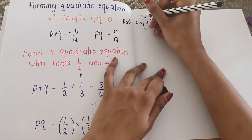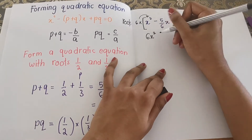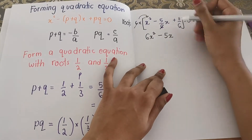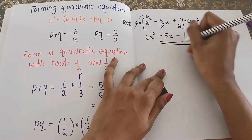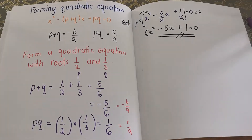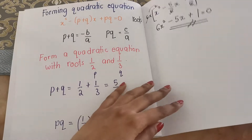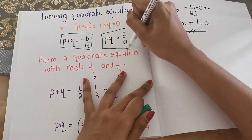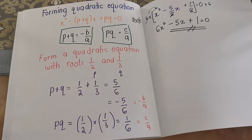Multiplying by 6: 6 times x² is 6x². 6 times 5/6 — we can cancel — so we get minus 5. 6 times 1/6 — also cancel — we get plus 1. So we have formed the quadratic equation 6x² minus 5x plus 1 equals 0 for the roots 1/2 and 1/3. All you need to understand is: add the roots to get B, and multiply the roots to get C.